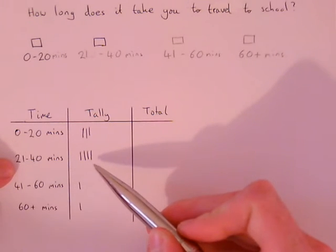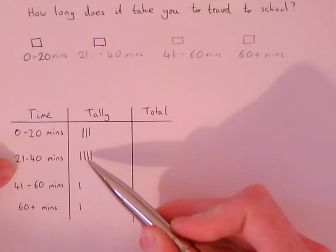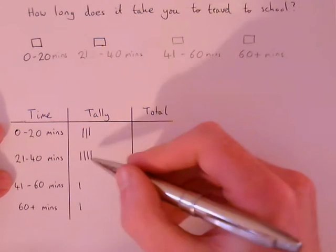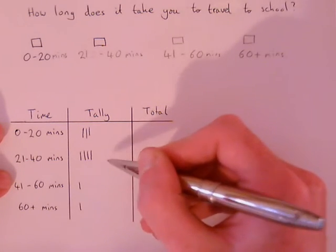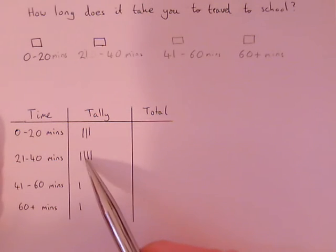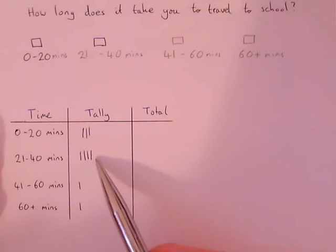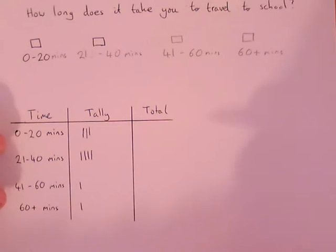With this one here, 21 to 40, I've now got four vertical lines. If I just carried on with lots of lines, when it gets to the end to count up the total, I'd be counting lots of little lines all the way along, and it would take me longer.